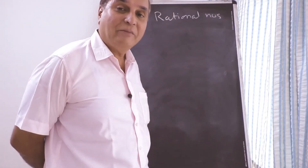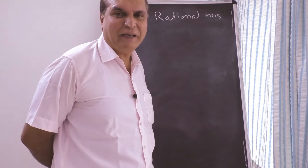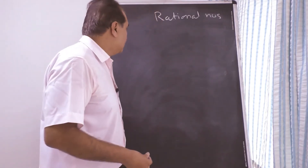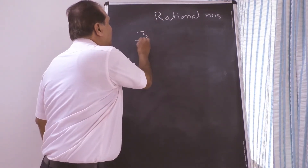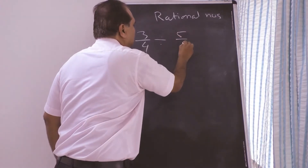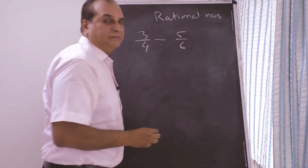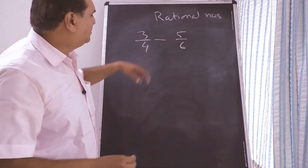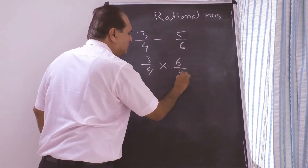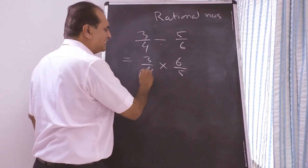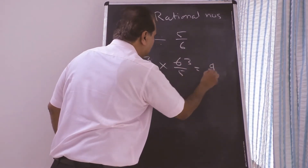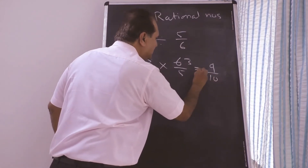Further, for rational number operations, students mostly make mistakes in division. Suppose 3 upon 4 divided by 5 upon 6. This division is actually a multiplication. What you have to do is take 3 upon 4 into 6 upon 5 — flip the second fraction. If possible, cut common factors: 2 and 2 cut, 2 and 3 cut. Then multiply: 3 into 3 is 9, 2 into 5 is 10. The answer is 9 upon 10.